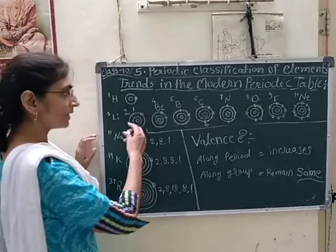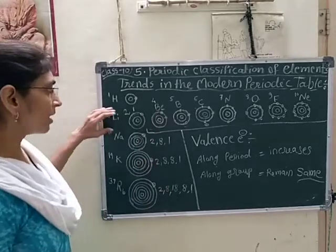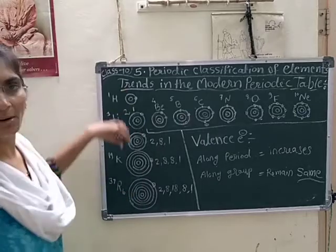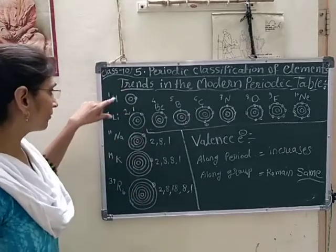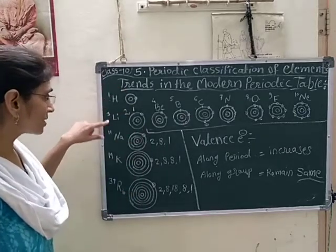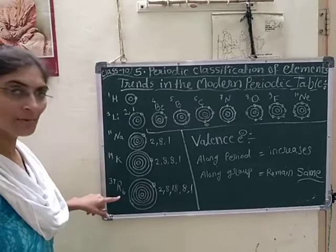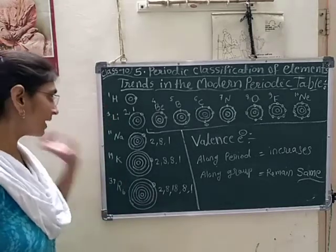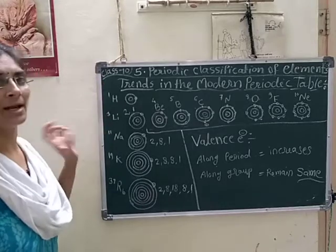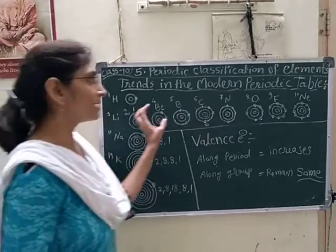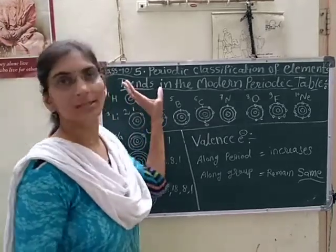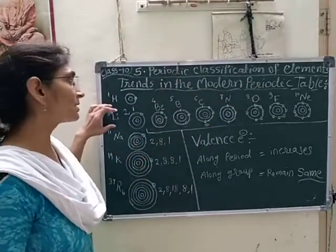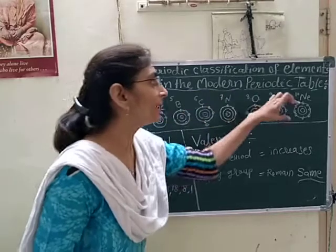So we can see here along the first group I have written here. What is the first group? Hydrogen, lithium, sodium, potassium, rubidium and so on. But here only I could write 5 elements. The first period is hydrogen and helium, that is different. I have considered here the second period.